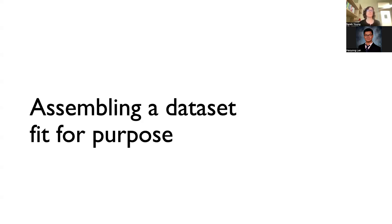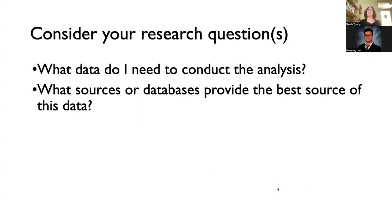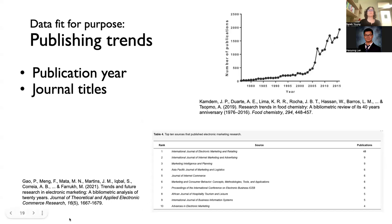Hao Yong just went over some really interesting examples of the way we might apply bibliometrics analysis to the literature — questions that we might ask and answer with that type of approach. Depending on what kind of questions we're asking, that's going to drive the decisions we make about the type of data we need for our project. So let's think about what data you need to do the analysis, and then what sources or databases provide the best source of that data.